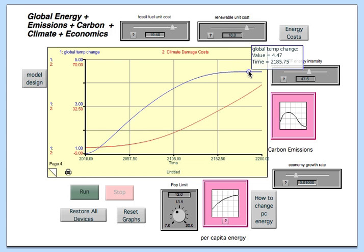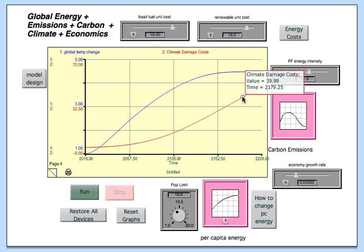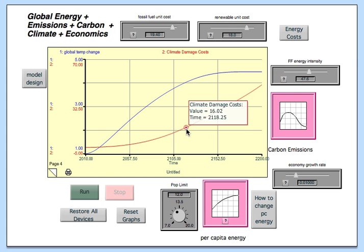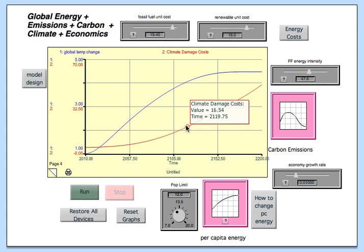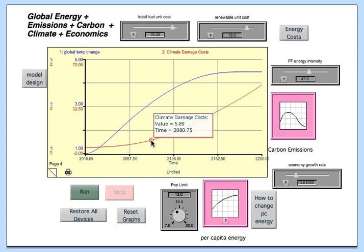But anyway, from that, it will calculate the climate damage costs. And so this is using that same relationship between the global temperature change and the cost, the economic cost associated with climate change that we used in a previous model.